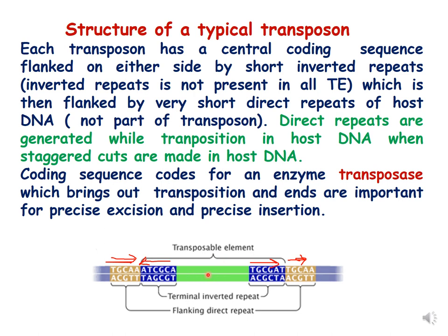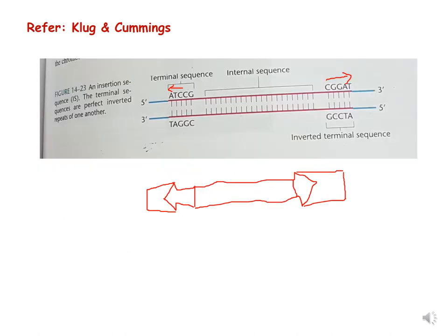Here is a representation of a transposon. The green portion is the coding sequence which codes for transposase. The blue regions are inverted repeats, represented by opposite-facing arrows. They are called inverted repeats because the sequences are inverted — the first sequence is ATCGCA and the second is its inverse TACGAT. These are called terminal inverted repeats. The direct repeats flanking them are generated in host DNA, shown with arrows in the same direction; the sequence TGCAA appears on both sides.